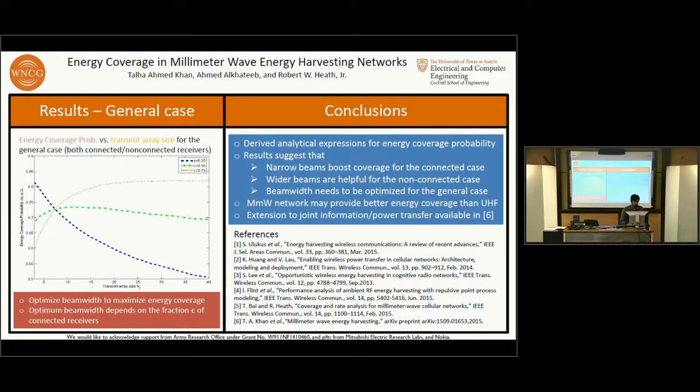The intuition is that if the beams are made too narrow, then the non-connected receivers would be in outage. But if they are made too wide, then the gains at the connected receivers would reduce. So there is typically an optimum antenna beamwidth that maximizes the energy coverage for a certain fraction epsilon of connected and non-connected receivers.